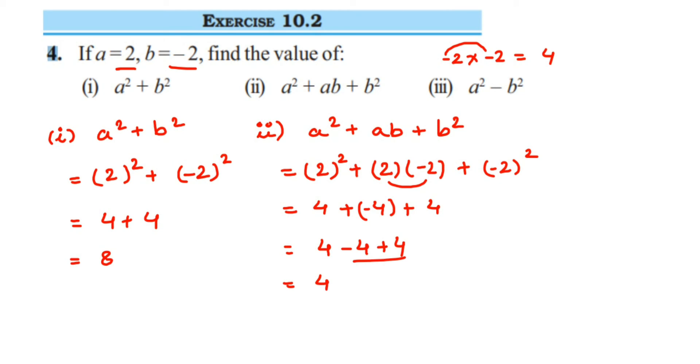The third question is a squared minus b squared. a value is 2, so 2 squared, minus b value which is minus 2, so minus 2 squared. 2 squared is 4, minus 2 squared is also 4. So 4 minus 4 equals 0.